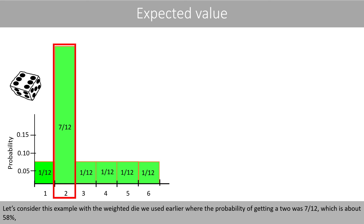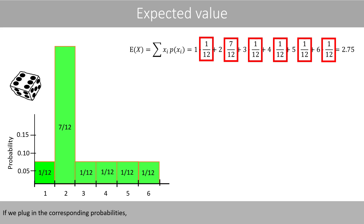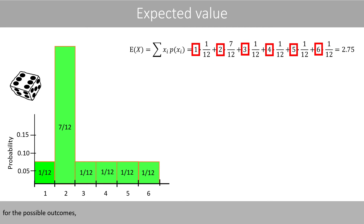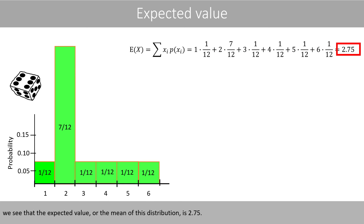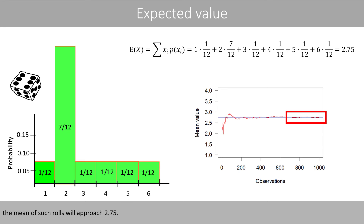Let's consider the example with the weighted die used earlier, where the probability of getting a 2 was 7 over 12, which is about 58%, whereas the probabilities of getting other sides of the die were 1 over 12. If we plug in the corresponding probabilities for the possible outcomes, we see that the expected value and the mean of this distribution is 2.75. If we would roll this kind of die many times, the mean of such rolls will approach 2.75.